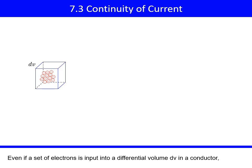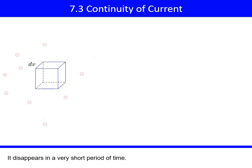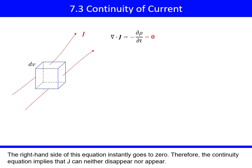Even if a set of electrons is input into a differential volume dV in a conductor, it disappears in a very short period of time. The right-hand side of this equation instantly goes to 0. Therefore, the continuity equation implies that J can neither disappear nor appear.